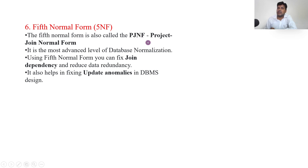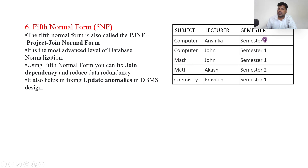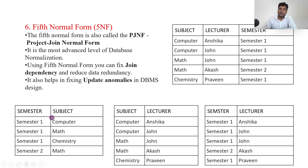Fifth normal form (5NF), also called Project-Join Normal Form (PJNF), is the most advanced level. It focuses on removing join dependency. For example, a table with semester, subject, and lecture — where lecture depends on subject, semester depends on lecture, and subject depends on semester — has join dependency. This table is divided into three: subject-semester, subject-lecture, and subject-semester-lecture. Removing join dependency is called fifth normal form.